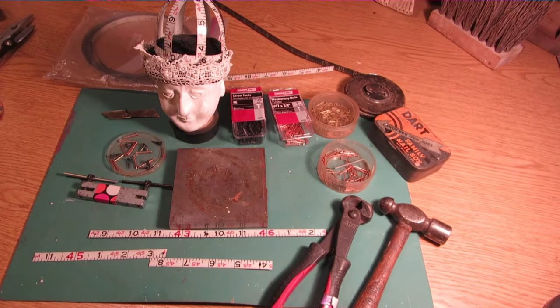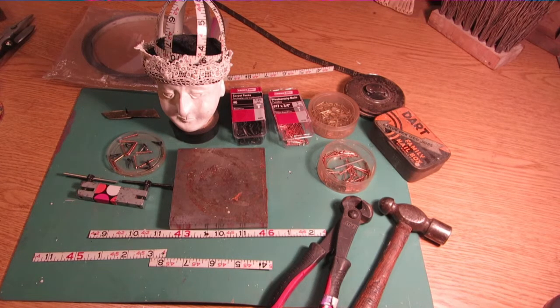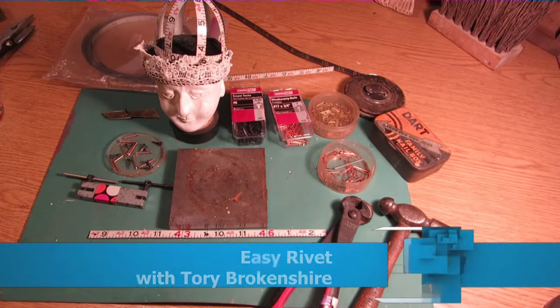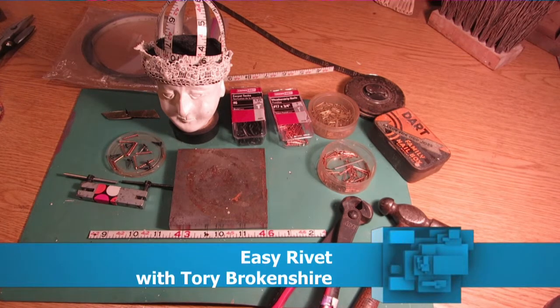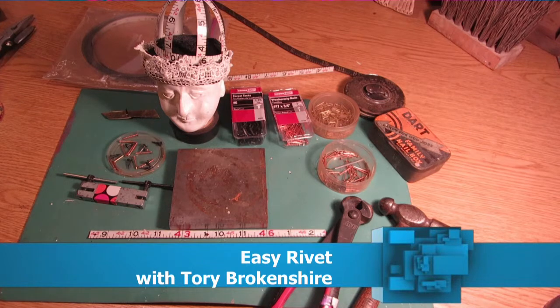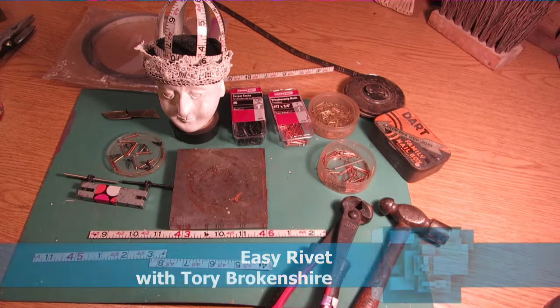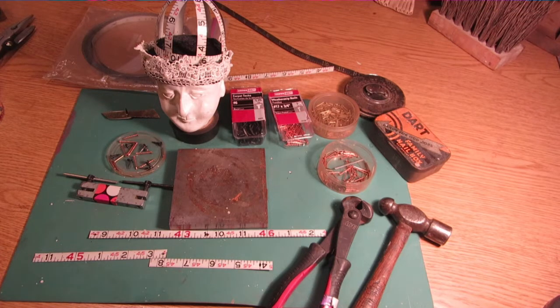Hi everyone, my name is Tori Brokenshire. I'm an assemblage artist and I need to find all sorts of methods to put my assemblages together. One thing that I really like to make are rivets. I found that they are the strongest and most permanent way of attaching metal together.